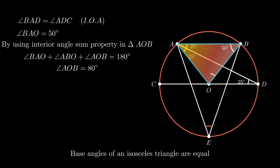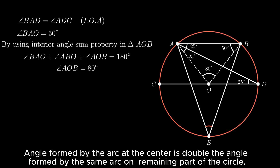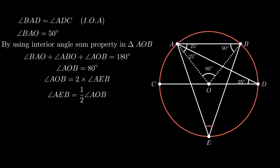Now angle AEB is formed by arc AB. Therefore, by using the theorem that the angle subtended by an arc at the center is double the angle subtended by the same arc on the remaining part of the circle, angle AEB is half of angle AOB, that is half of 80 degrees, which is equal to 40 degrees.